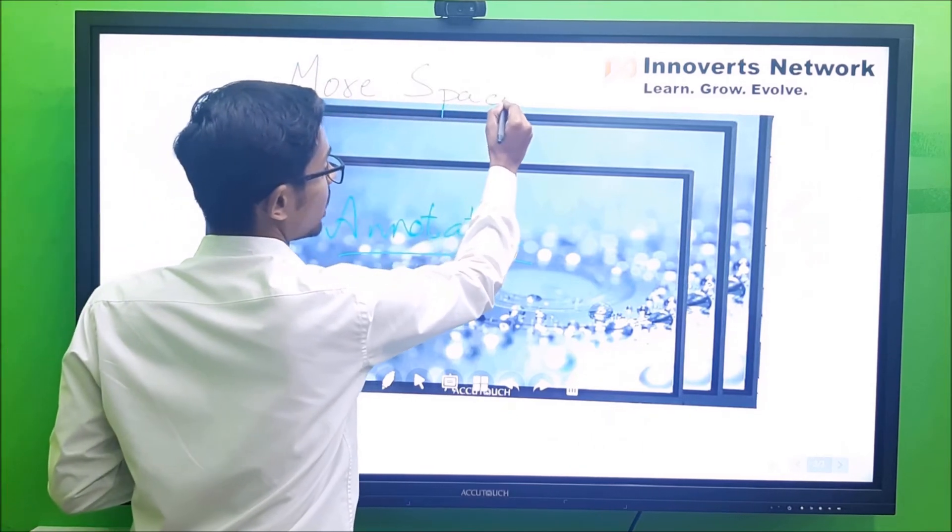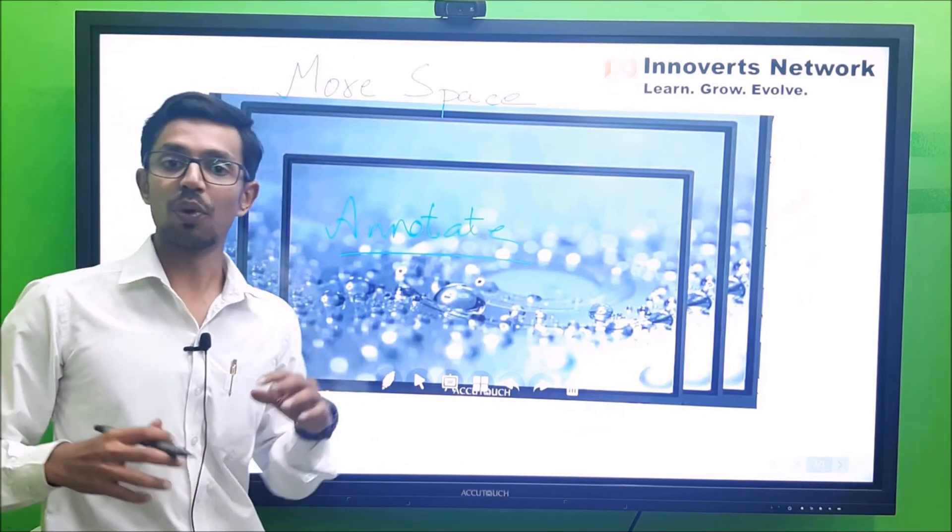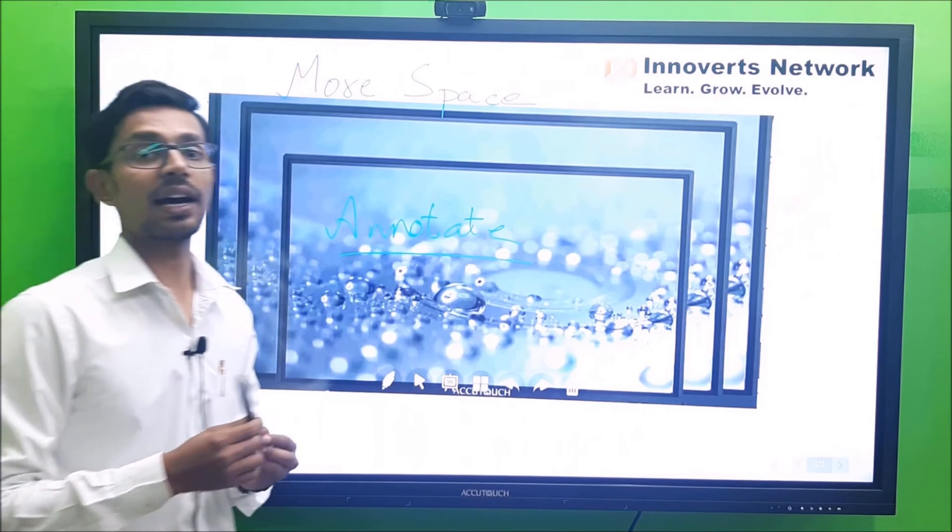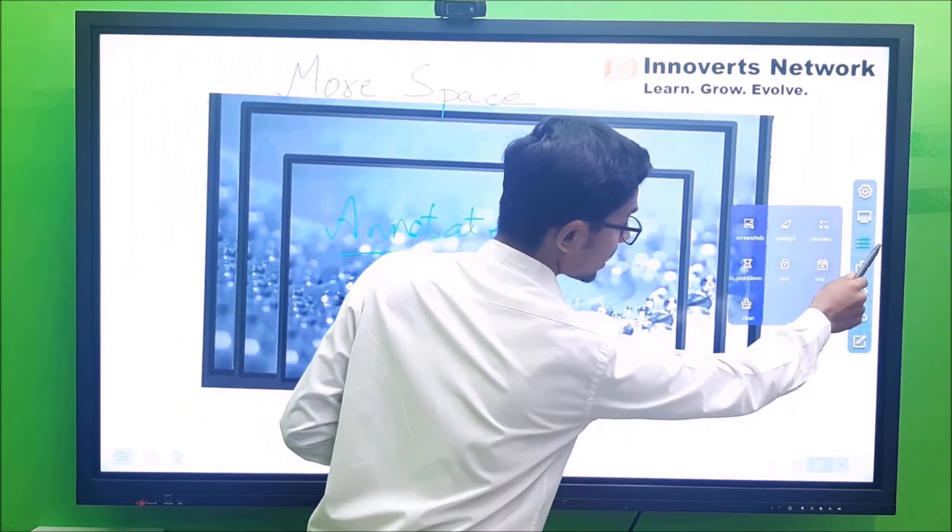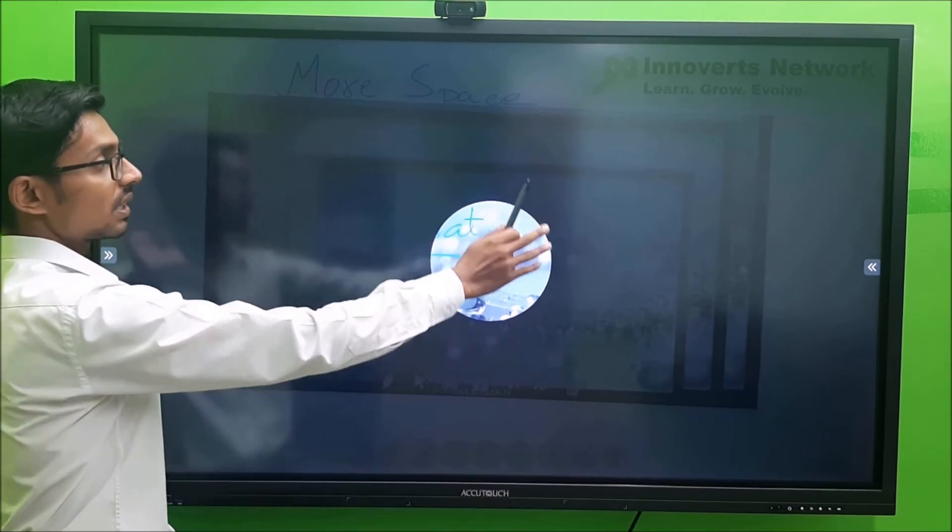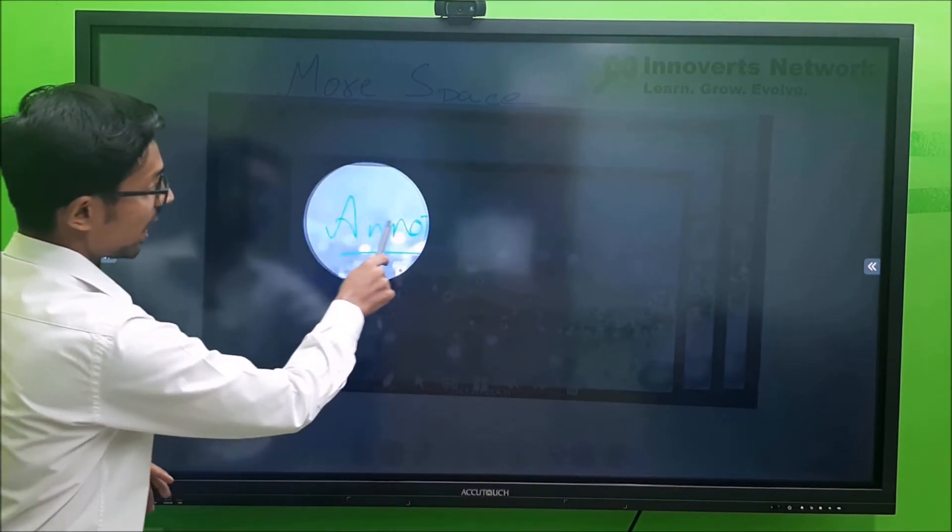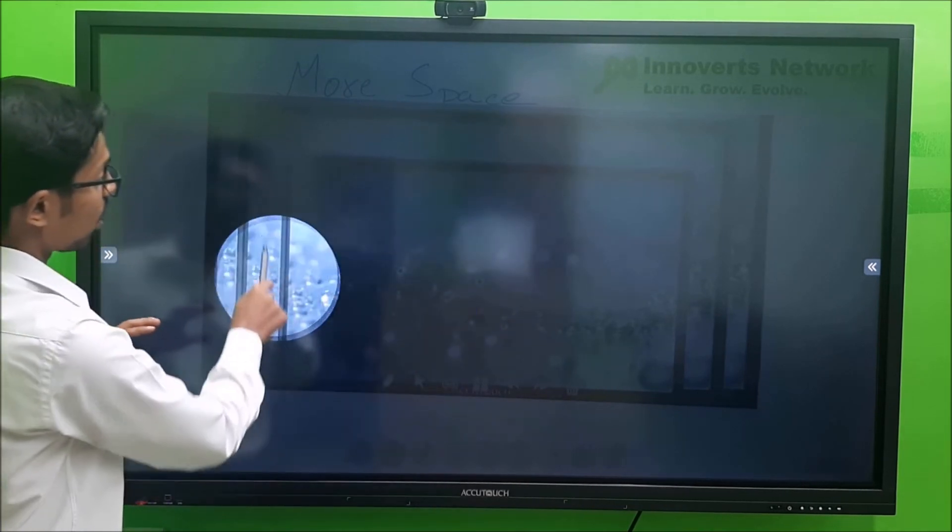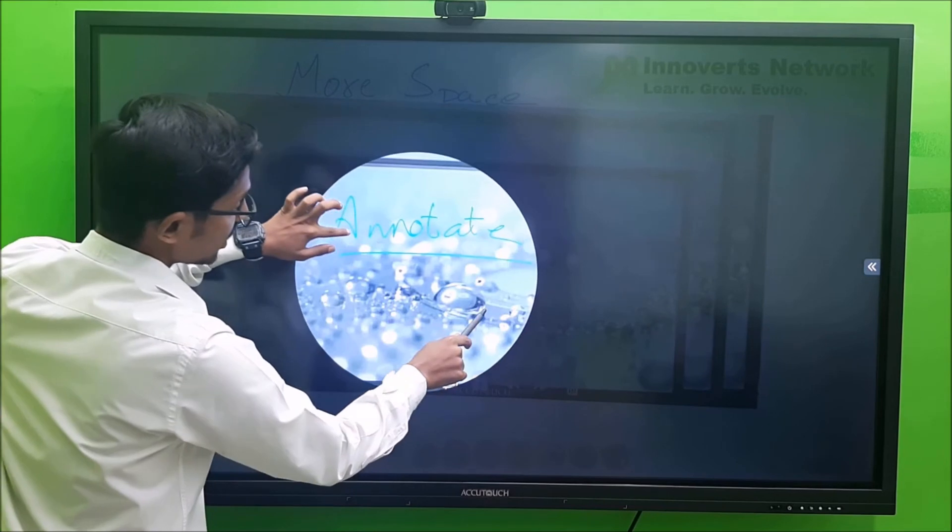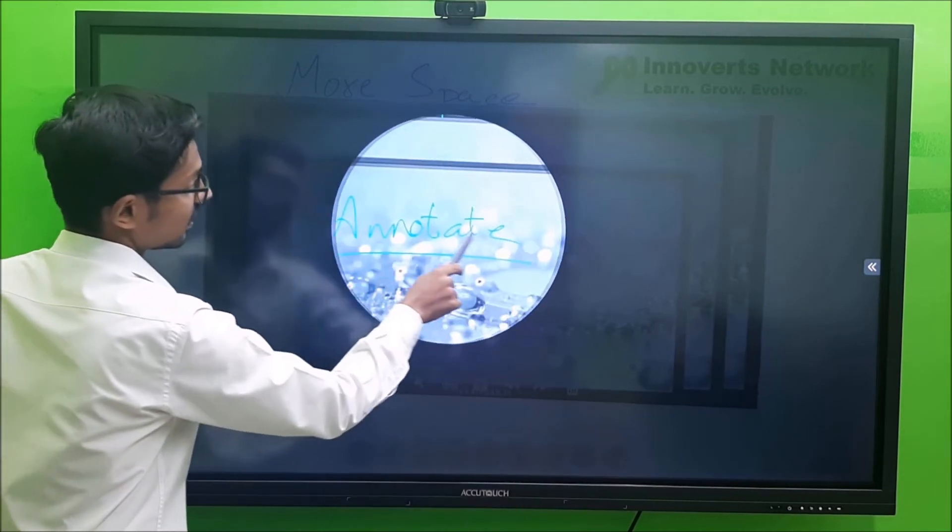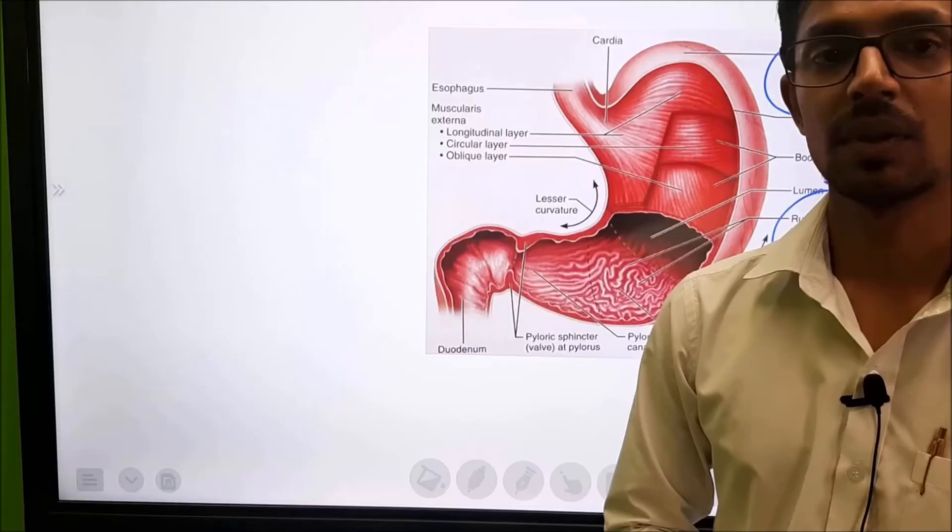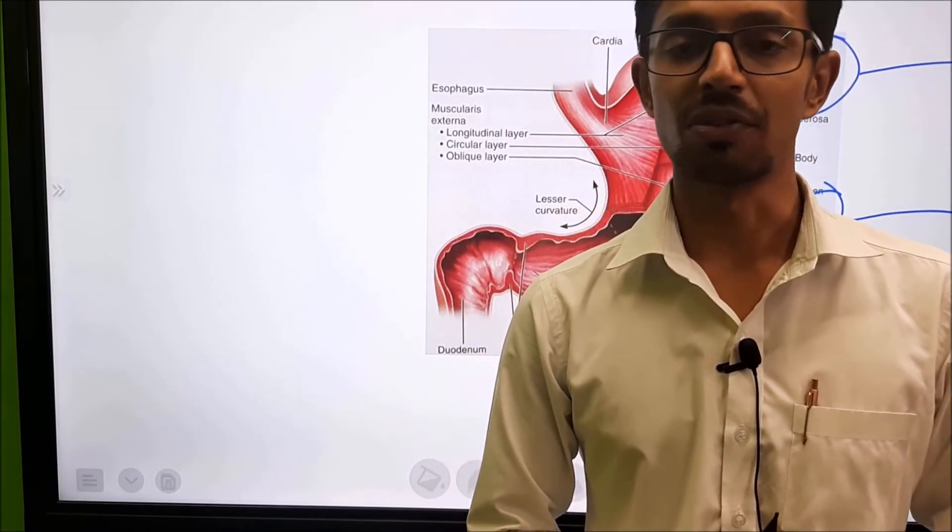Now if I want to highlight a particular portion on this screen, I have a spotlight toolbar with which I can just select on it and you see it dims all the content apart from what I want to highlight. This way I can explain a particular content on my screen. This size can also be adjusted based on my requirement.